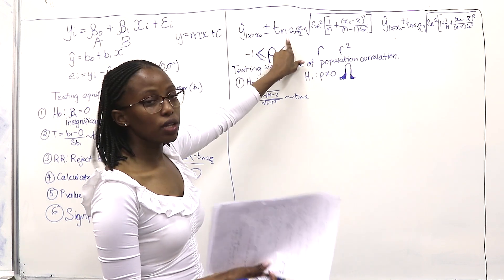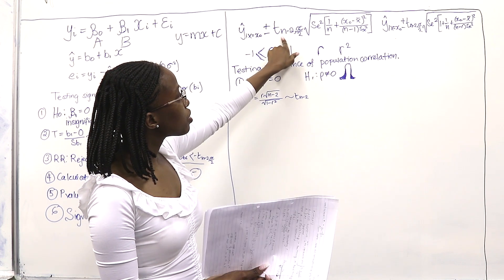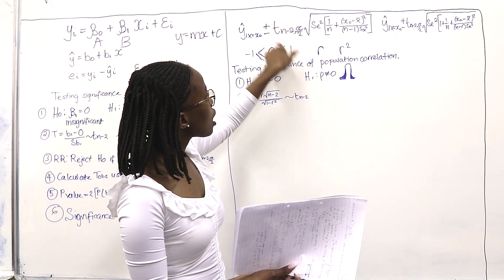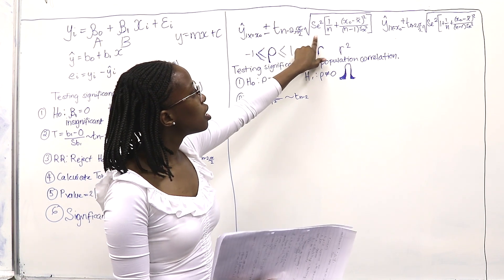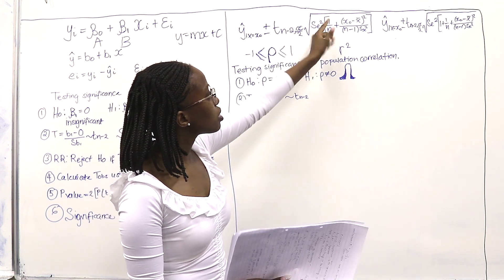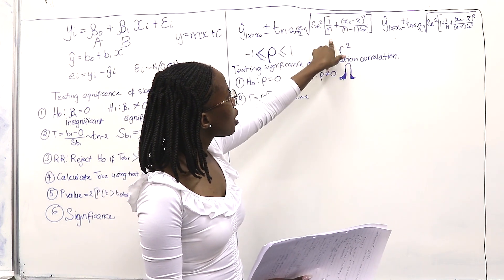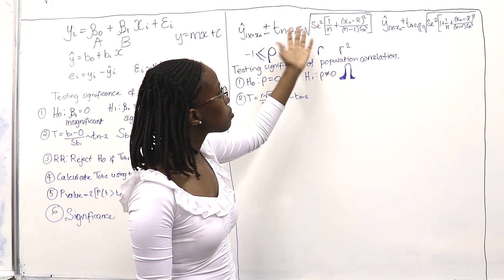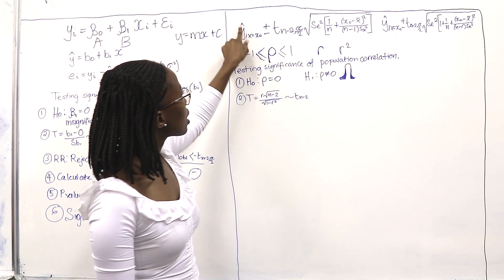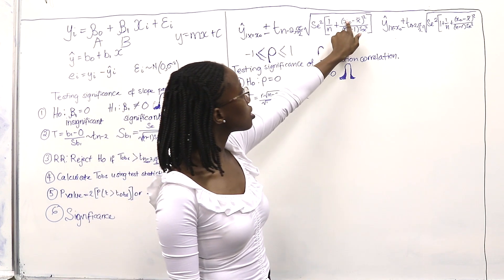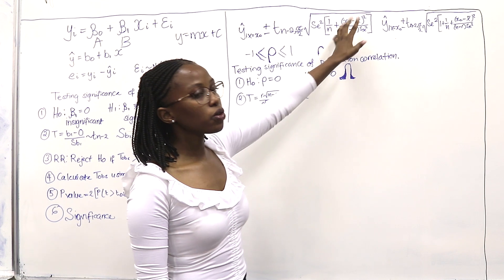They give you the level of significance, which is how you get alpha over 2. Degrees of freedom are always n minus 2, so you use the T table. SE is always given, so you just square it. For 1 over n, you know your sample size. If they gave X0 as 60 when calculating Y-hat, put 60 in there and subtract X-bar.